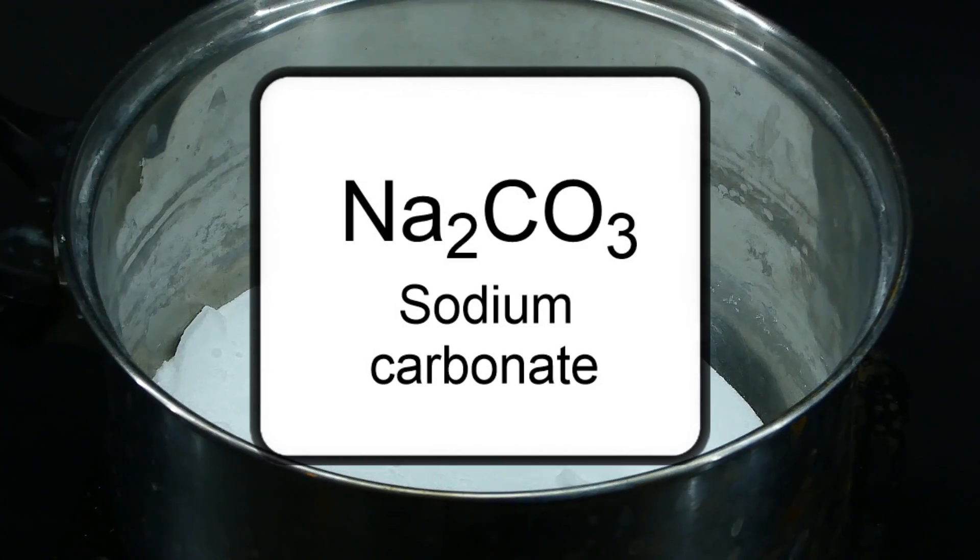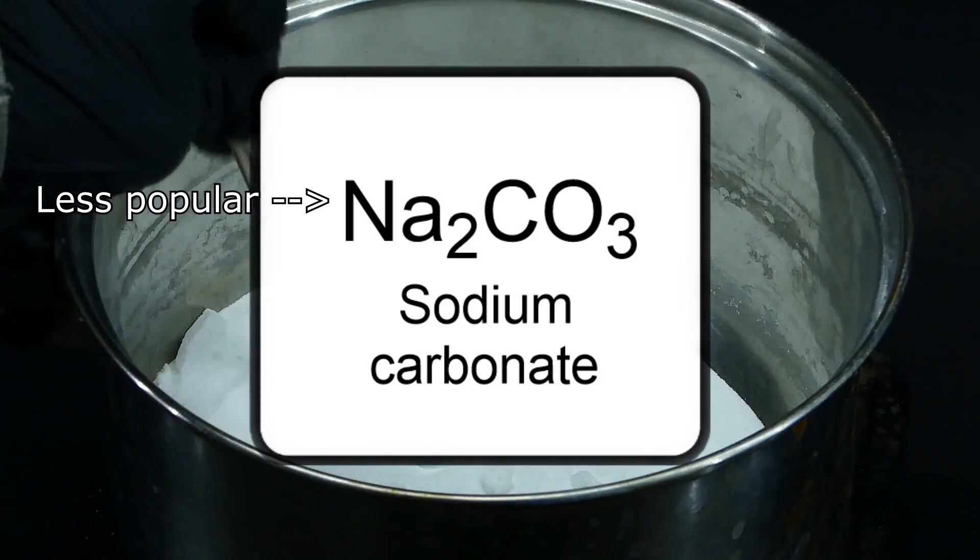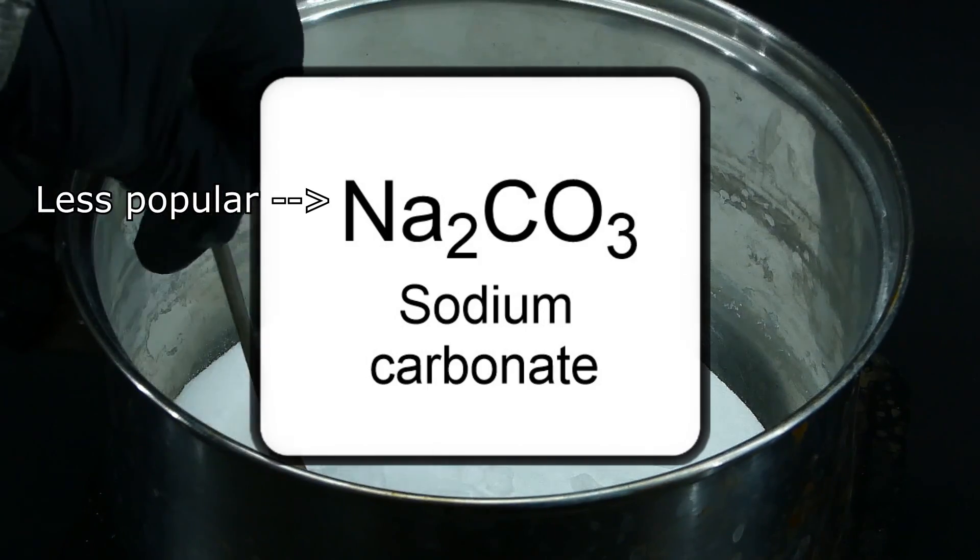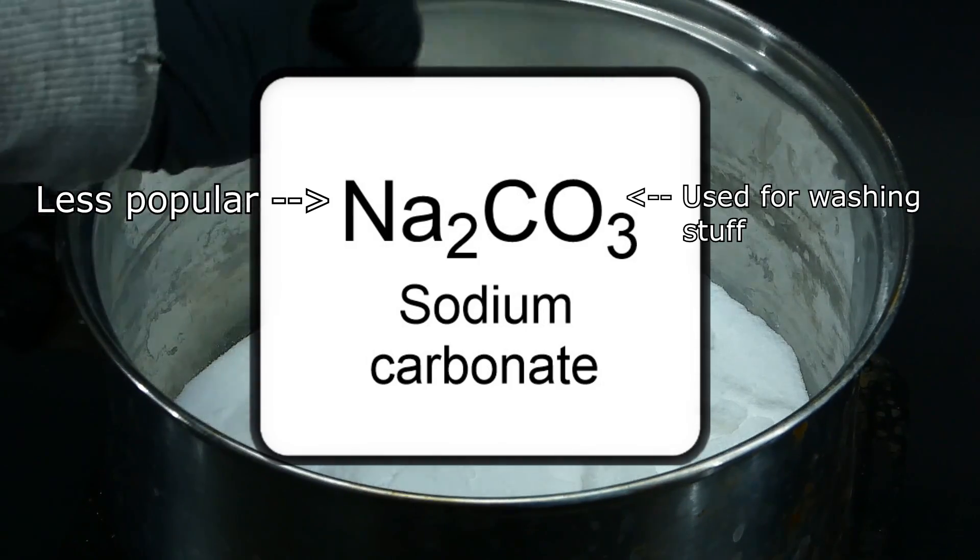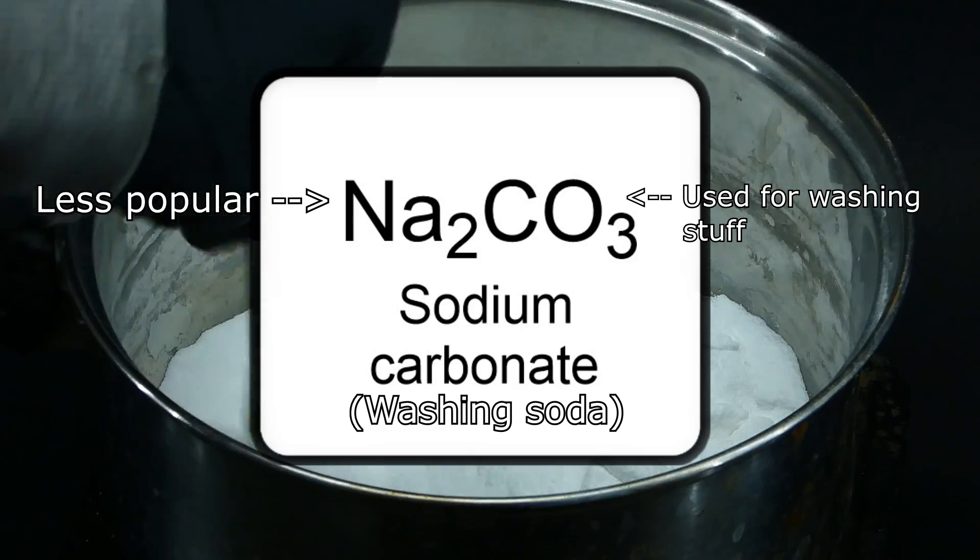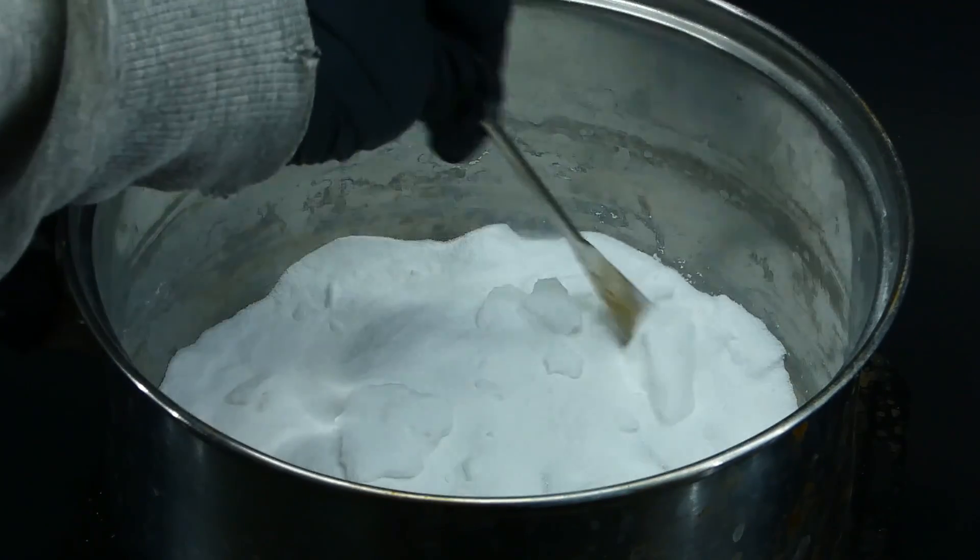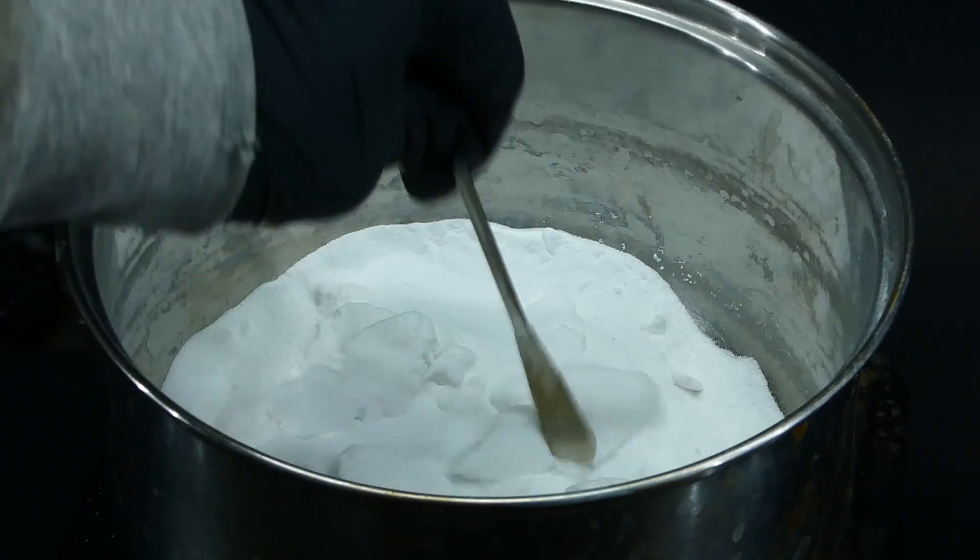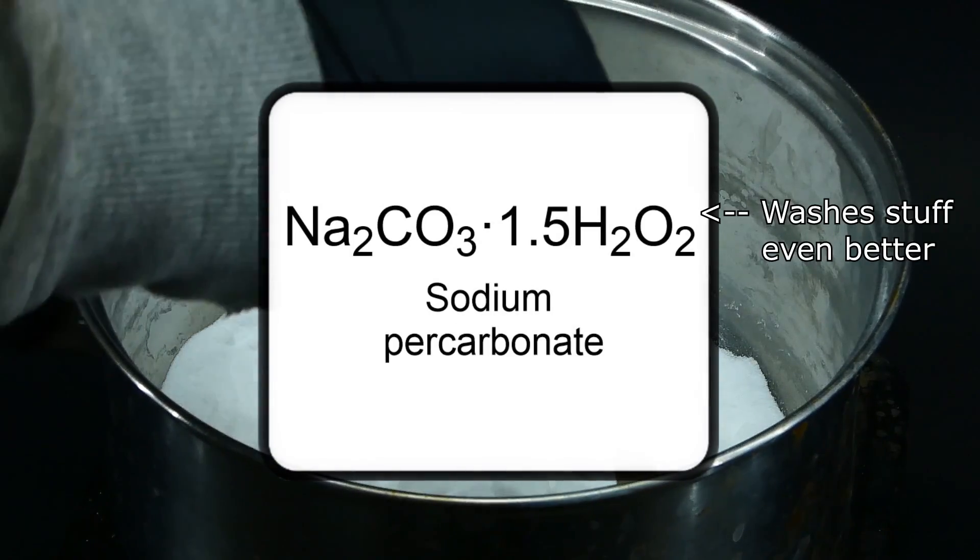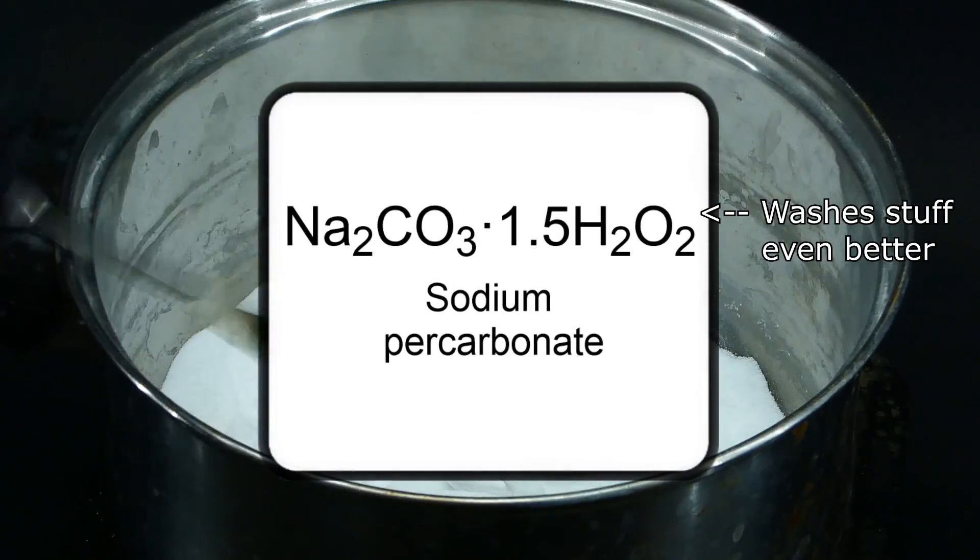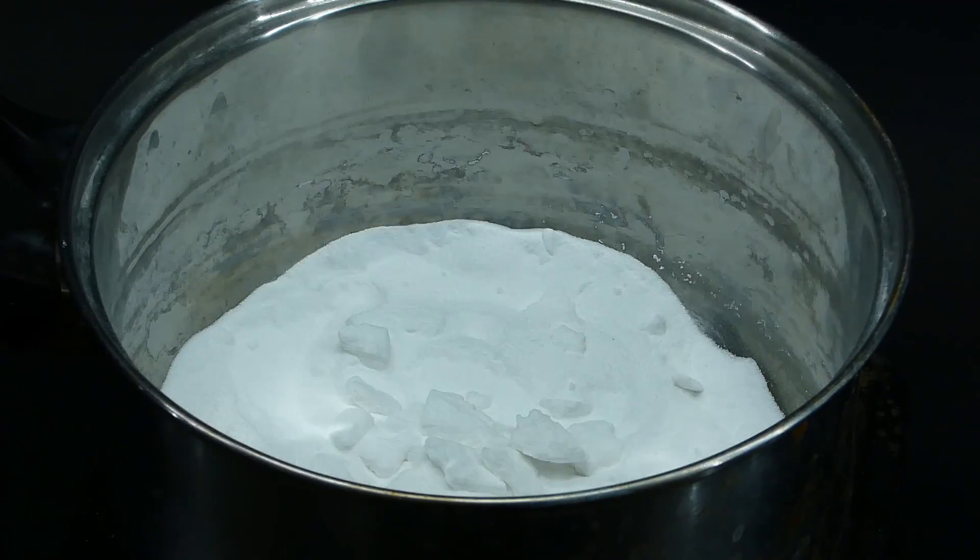Sodium carbonate on the other hand is a little less popular of the two, although it also has some important applications like being used for washing stuff, hence it's commonly referred to as washing soda. It can also be combined with hydrogen peroxide to make something called sodium percarbonate, which is a useful cleaning agent that most of us know as the active oxygen detergent.